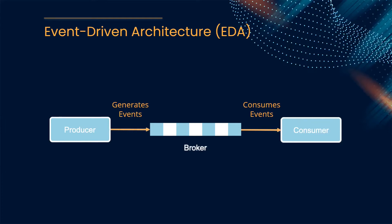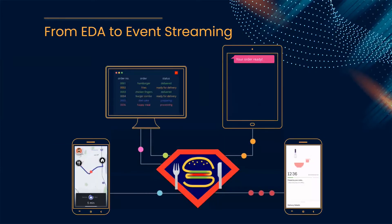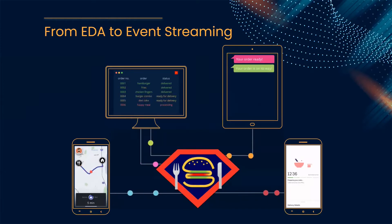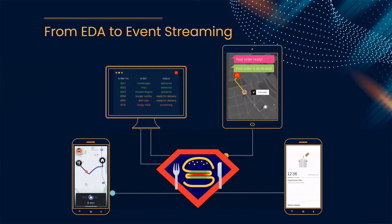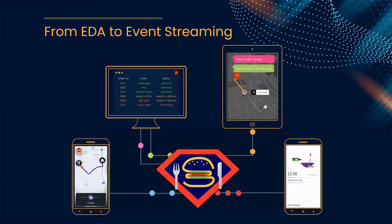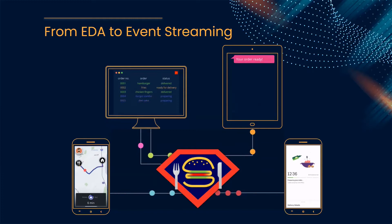Producers can be internal services or external sources that generate data and send it into the broker. But what happens when there are thousands of producers or consumers? What happens when producers generate thousands of messages each second? How would SuperEats handle this volume? SuperEats is working with thousands of restaurants and tens of thousands of customers and drivers all over North America, each one generating events all at once. When you have enough events entering your system, it becomes a stream of data — a constant, unbounded flow of data with no real beginning and no real end, hence event streaming.